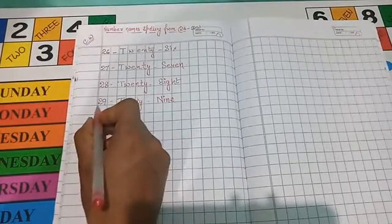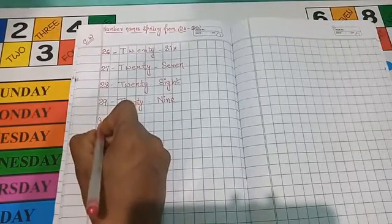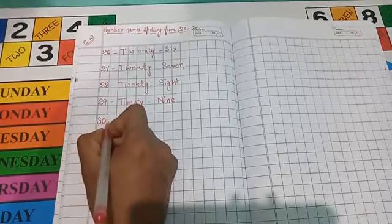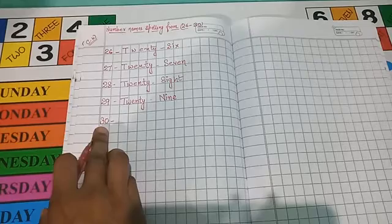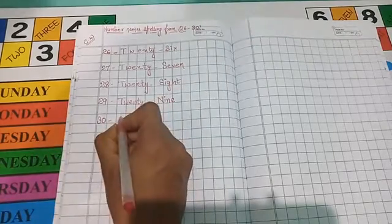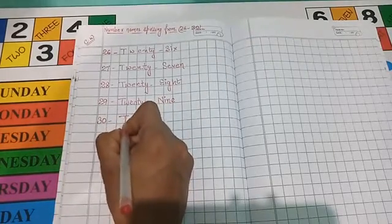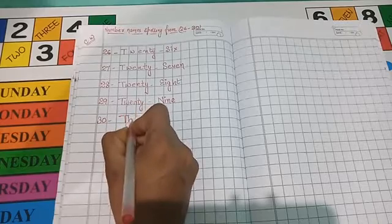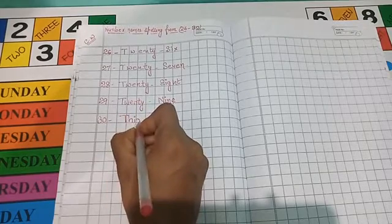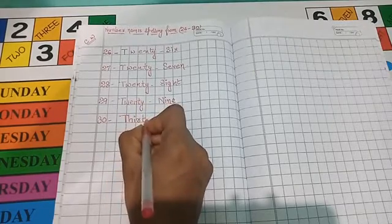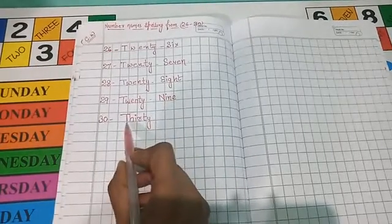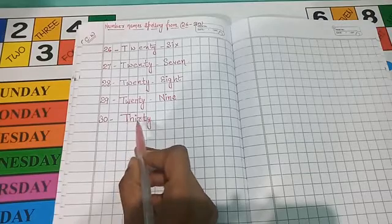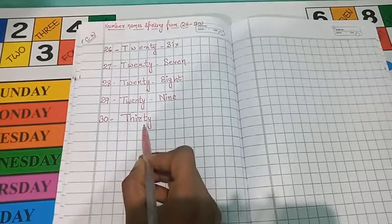Last number is after 29, 30, 3-0, 30. The spelling of number 30 is, write, T-H-I-R-T-Y, 30. See, T-H-I-R-T-Y, 30.